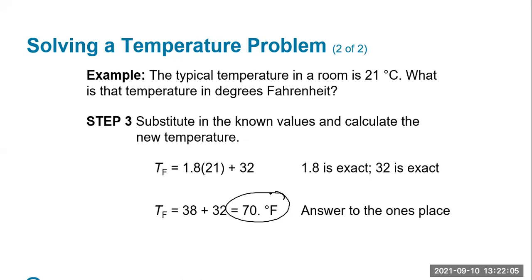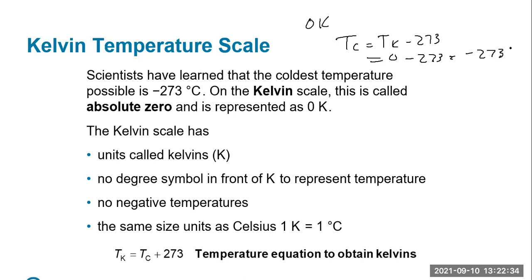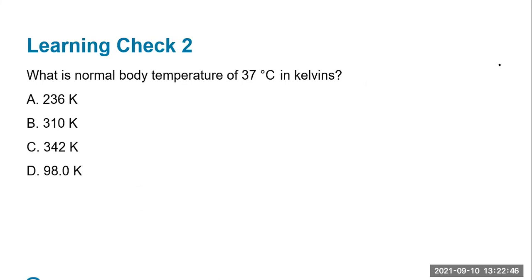The Kelvin scale, also known as the absolute temperature scale, uses 273 as its reference point. Absolute zero is zero Kelvin, and doing the conversion to Celsius — zero minus 273 — means absolute zero is minus 273 degrees Celsius. That's an important number we'll also see in the gas law chapter.